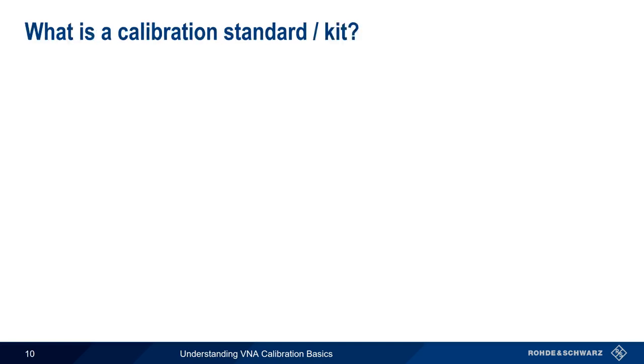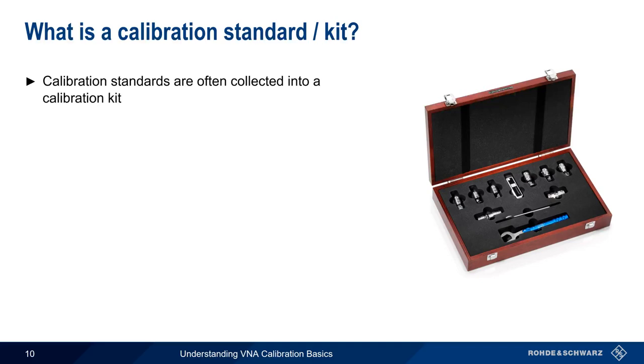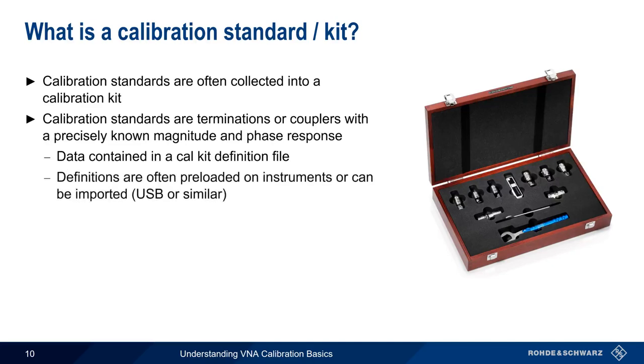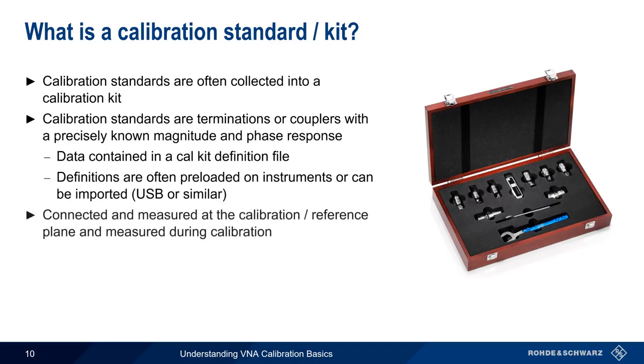In order to perform a calibration, we need calibration standards. Calibration standards are usually delivered in the form of a calibration kit. The calibration standards in a kit are terminations or couplers with very precisely known magnitude and phase responses. In other words, we know what results we should get when we use them. This well-known response state is recorded in a so-called calibration kit definition file, which are often preloaded on an instrument or can be imported, for example via USB. If we compare our measurements of these standards to their very precisely known values, we can quantify the magnitude and phase errors introduced by our VNA and by our measurement setup.